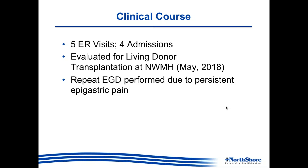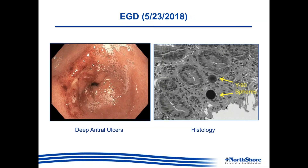Fortunately she was referred to Northwestern Memorial Hospital for evaluation for liver transplant in the beginning of May 2018. A very generous family member had also offered to donate, so she was considered a candidate for living donor transplantation. Given her complaints of persistent epigastric pain at the transplant center, an EGD was then performed yet again. As you can see here, there is significant worsening and deepening of the antral ulcers, with significant erythema and increase in size and duration. Biopsies were taken of these ulcers.